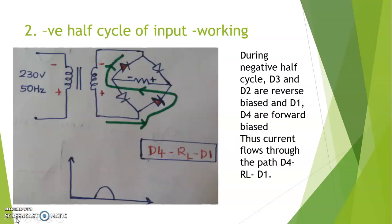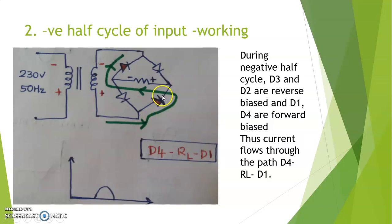During the negative half cycle, the polarity induced is negative at the top and positive at the bottom. The same polarity is induced on the right hand side. The current begins to flow from the positive terminal, and the diode at the bottom, shown in red, is forward biased and will conduct. The current flows through the resistor and finally through the diode which is forward biased, shown in red, and the circuit is completed.